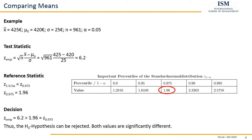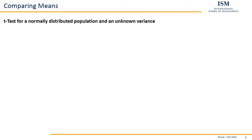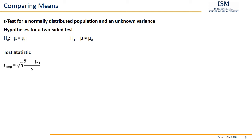Now consider the second possibility: what if the standard deviation or variance is not given, or our sample is just too small? In that case, we use a t-test. The t-test has more or less the same hypotheses for a two-sided test, and even the test statistic looks slightly familiar — the only difference is that instead of the known standard deviation sigma, we divide by the corrected standard deviation S. This gives us our test value t-empirical.